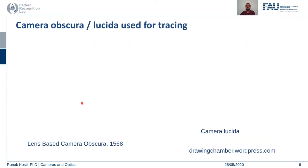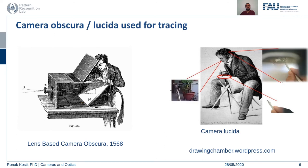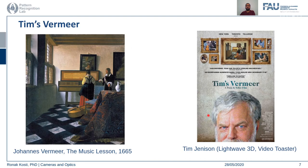Another application of camera obscura was for tracing. A device like this — essentially a pinhole camera with an additional reflector — was used for tracing. You could see large real-world images projected inside the plane and easily trace them using paper. This is an example of how artists could trace real-world scenes.